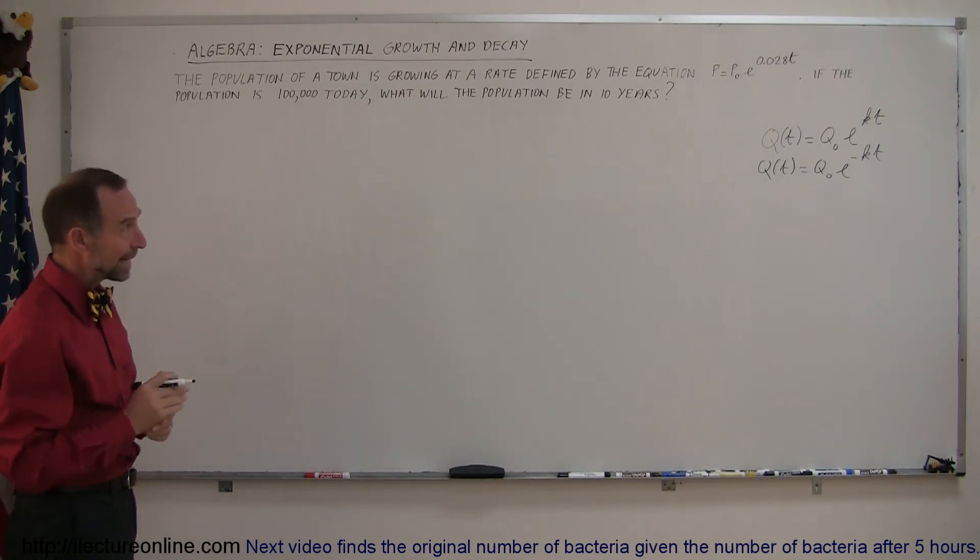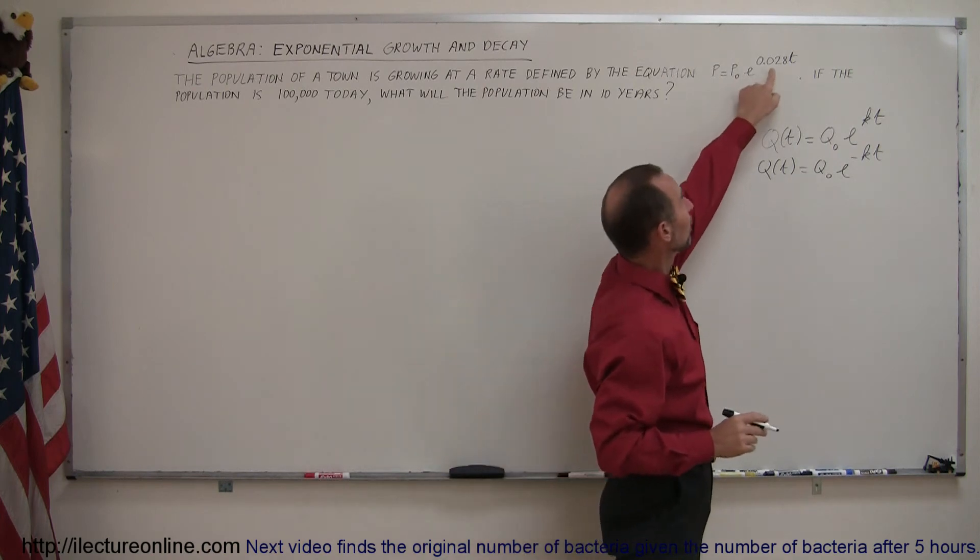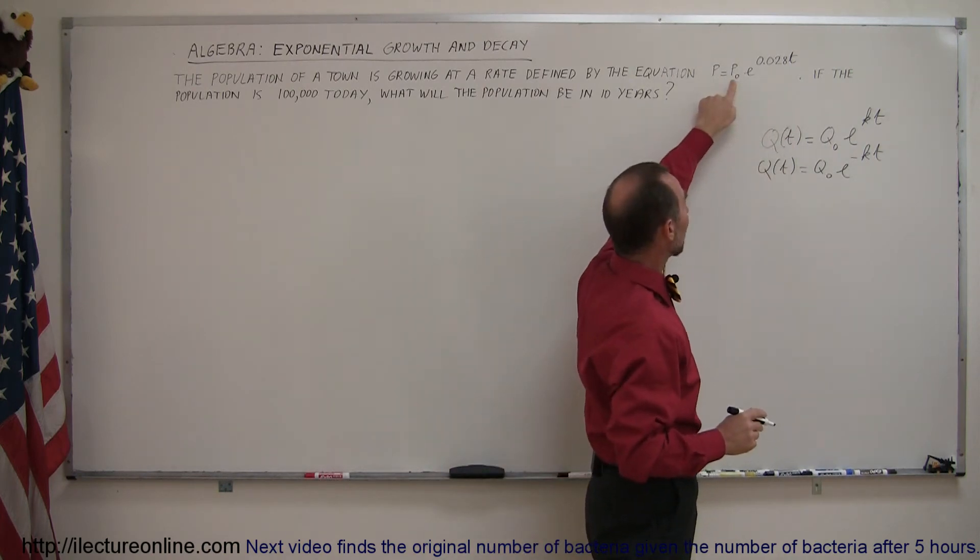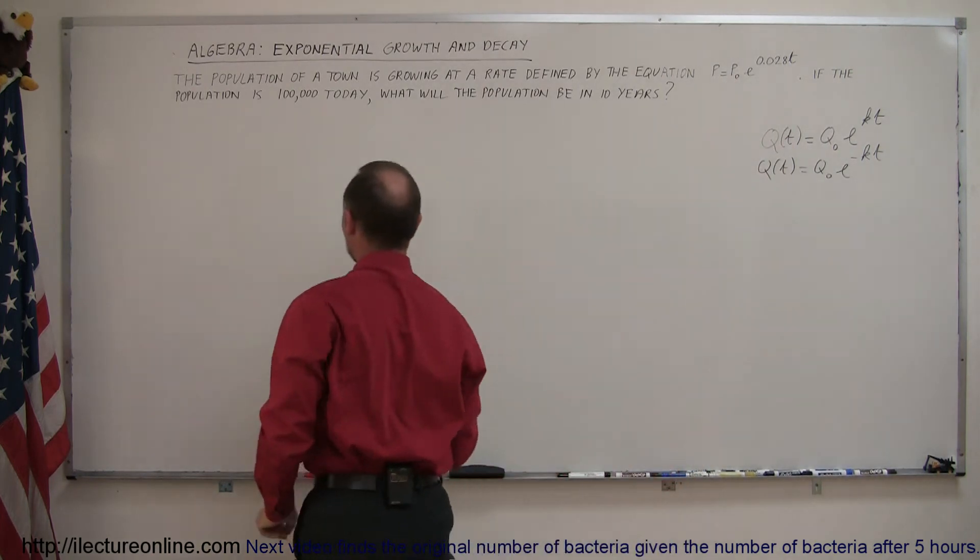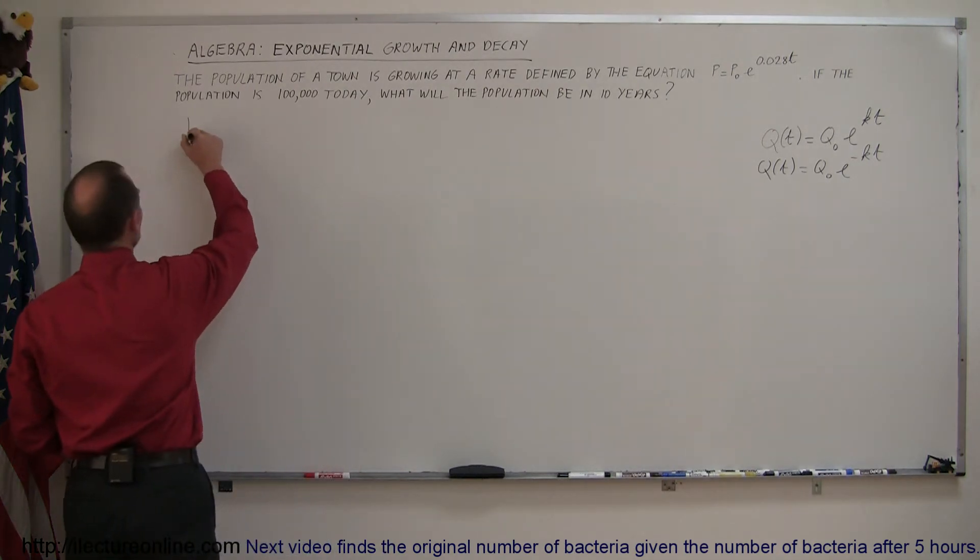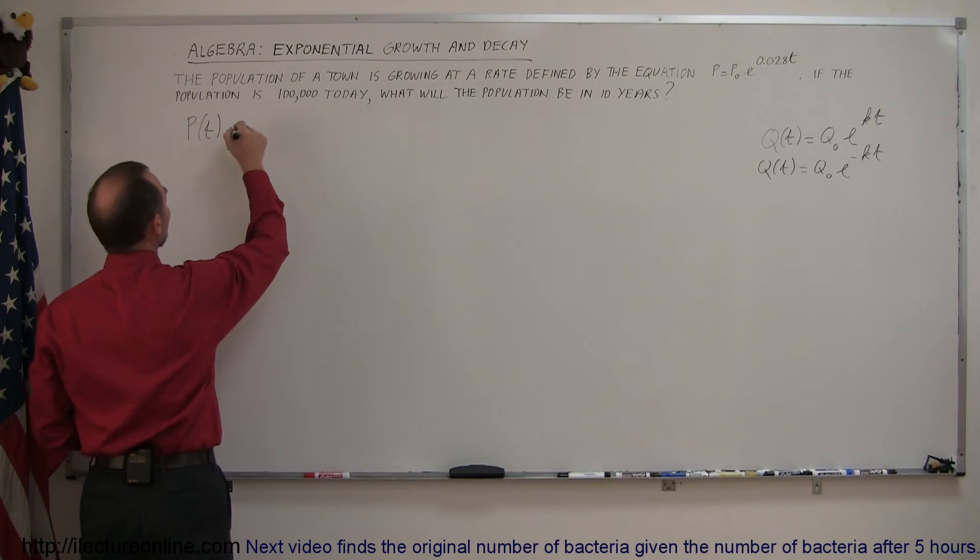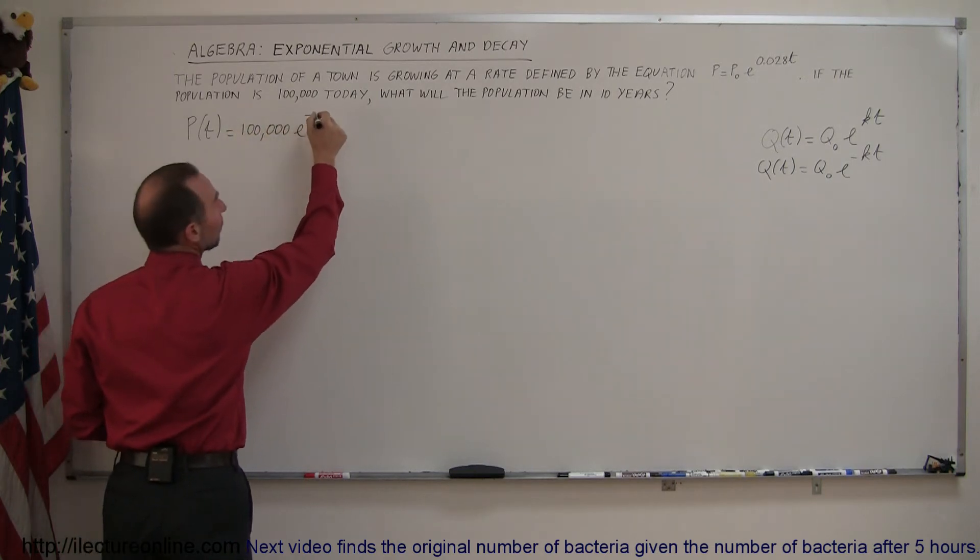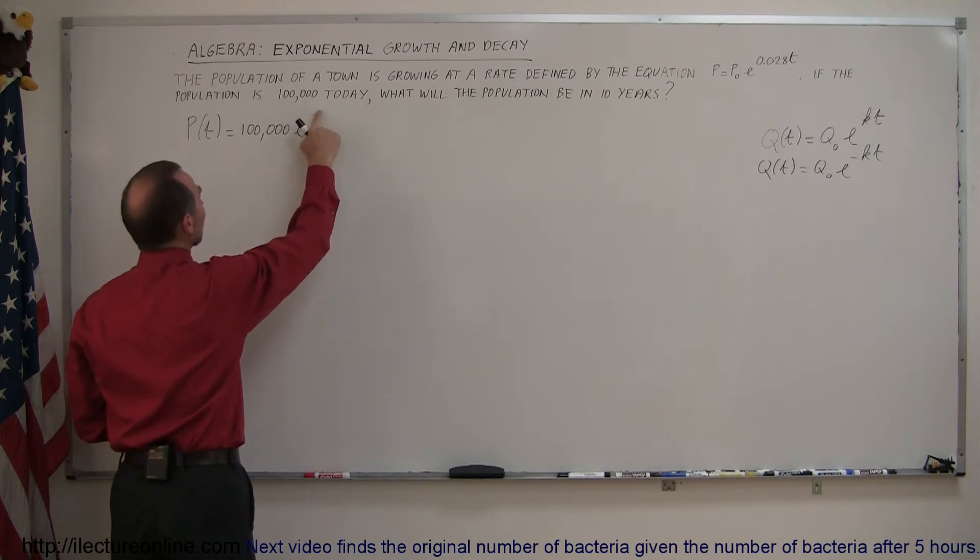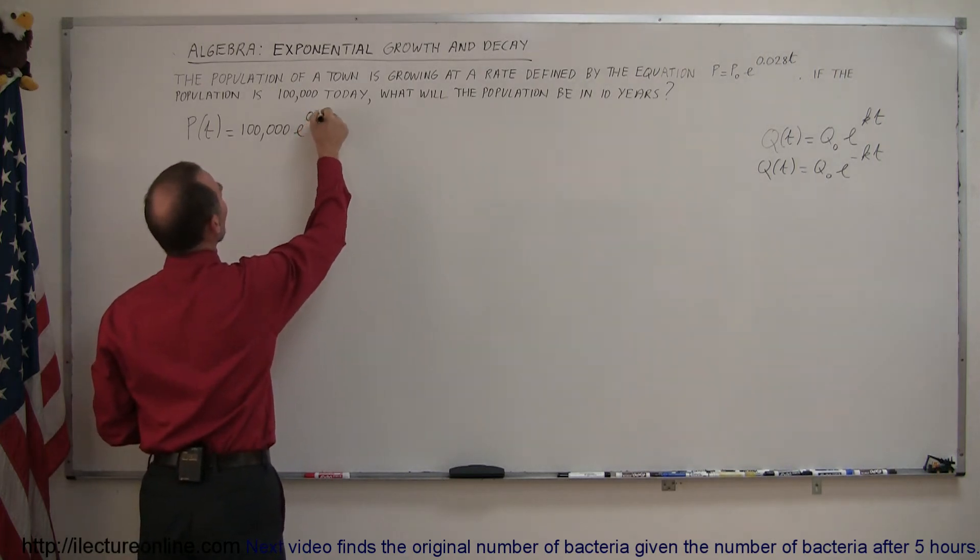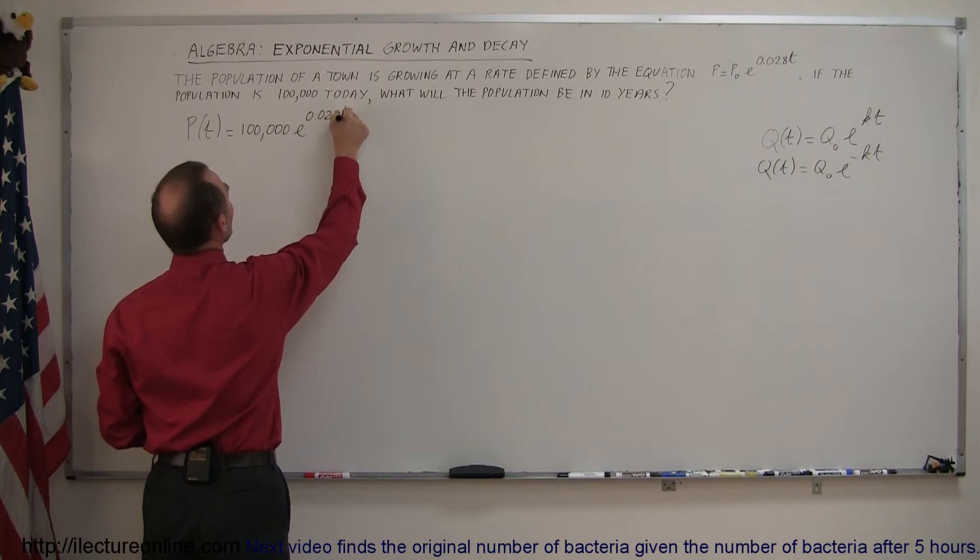Since they already gave us the growth constant and they give us the initial population, let's write that down in the equation. So the population as a function of time in the future will be equal to the current population of 100,000 times e to the—oh, not minus because it's a growth equation—e to the positive 0.028t.